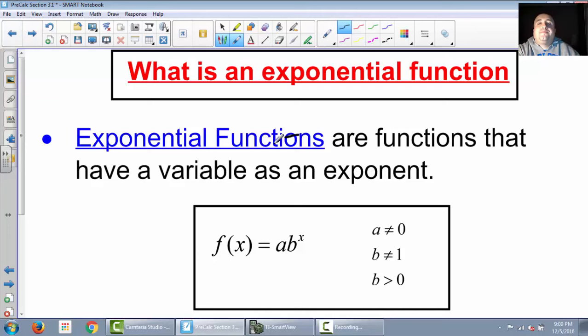So what is an exponential function? An exponential function is a function that has a variable as an exponent. Here is the basic form: f(x) equals a times b to the x. And there are some restrictions here. A cannot equal 0, because if a is 0, then this whole equation will be equal to 0. We can't have that. b cannot equal 1, because 1 raised to any power is just 1, so all of your answers would be 1. And b must be greater than 0. Your b has to be bigger than 0 in order to be an exponential function.